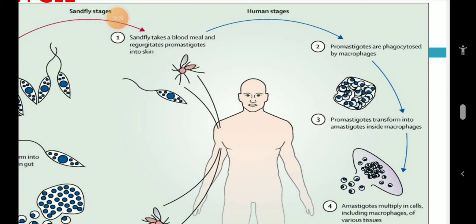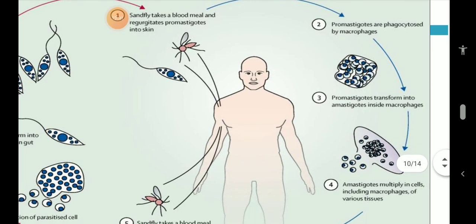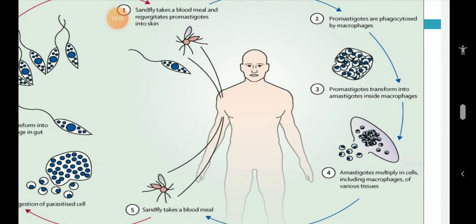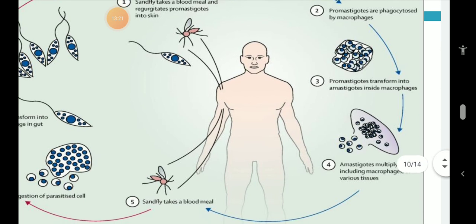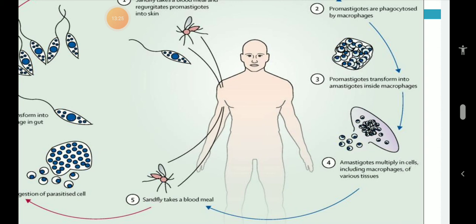These receptors bind with complement receptors on the surface of macrophages, either directly or through C3b or C3bi receptors. Leishmania involves the reticuloendothelial system. Parasitized macrophages disseminate the infection to the spleen, liver, and bone marrow. The spleen is enlarged with a thickened capsule, dilated vascular spaces, and reticular cells packed with amastigotes. In the liver, Kupffer cells increase in size and number and are infected with amastigotes. Bone marrow turns hyperplastic as parasitized macrophages replace normal hemopoietic tissue.